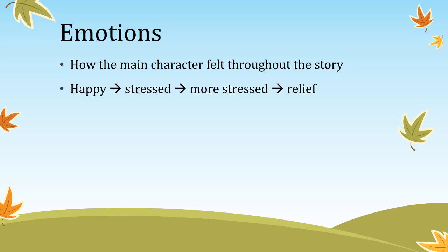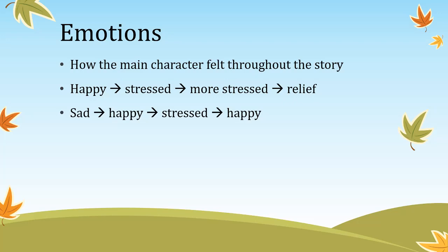Emotions — how the main character felt throughout the story — should take the marker on a journey. Happy, then stressed, more stressed, then relief. Or very sad at the beginning, someone cheers them up, then something bad happens, then happy again at the end. You want changes in the emotions to give your writing a sense of excitement. Emotions are the heartbeat of the writing — if you input good emotions, your writing will be very exciting.